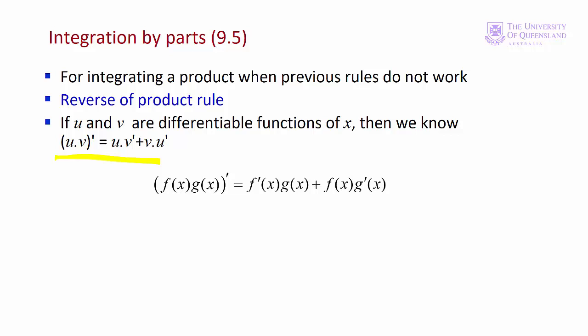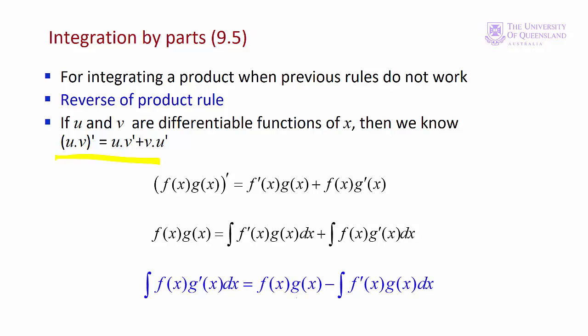The integral is the anti-derivative — it reverses derivation. So we can integrate both sides. On the left-hand side we'll just have f(x) times g(x). On the right-hand side we apply the sum rule and have two integrals. Rearranging gives us our formula for integration by parts. On the left we have a product as the integrand, and on the right we also have a product as the integrand. The objective is to transform a difficult integration into something easier.